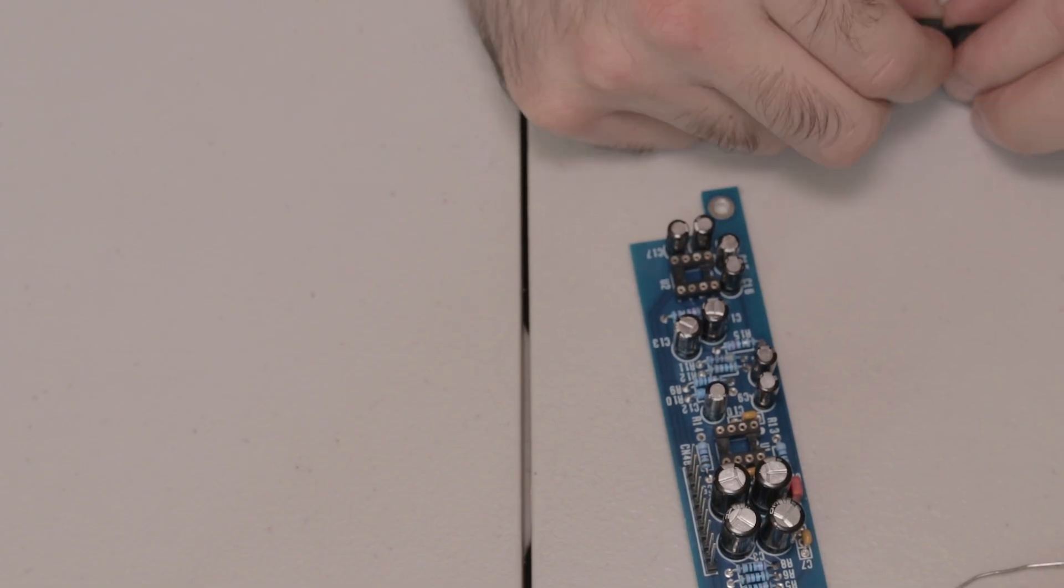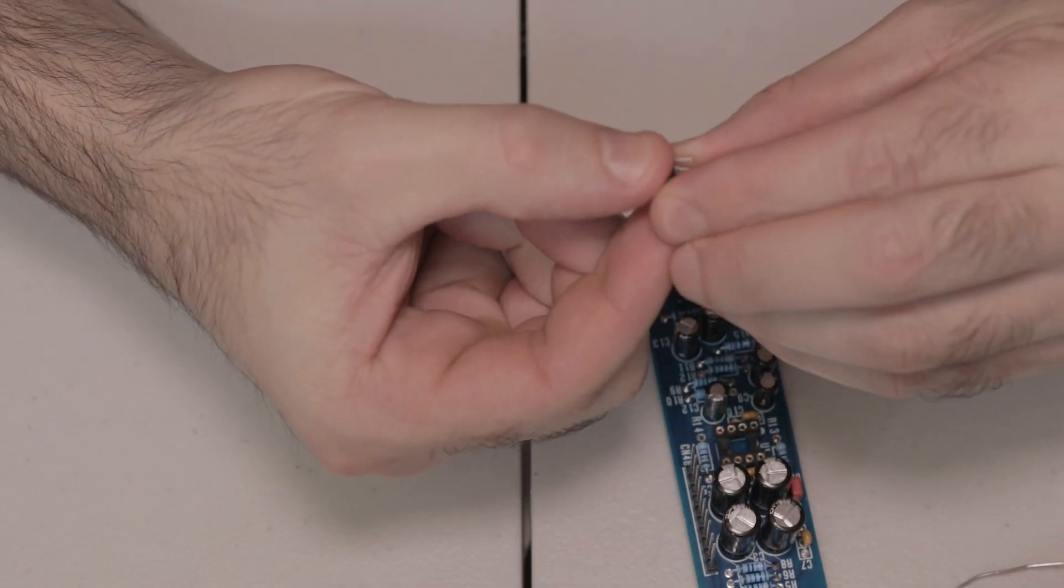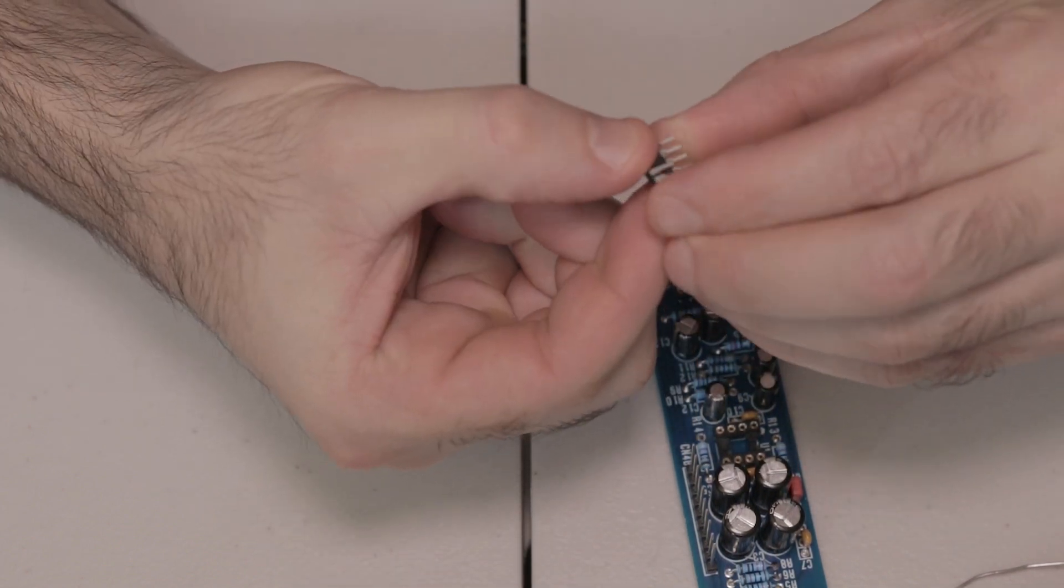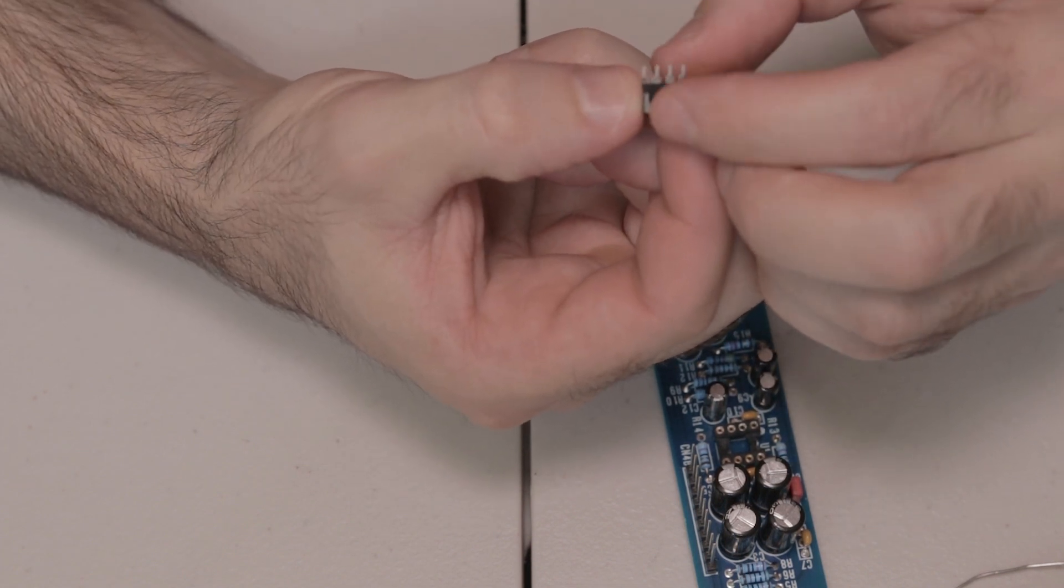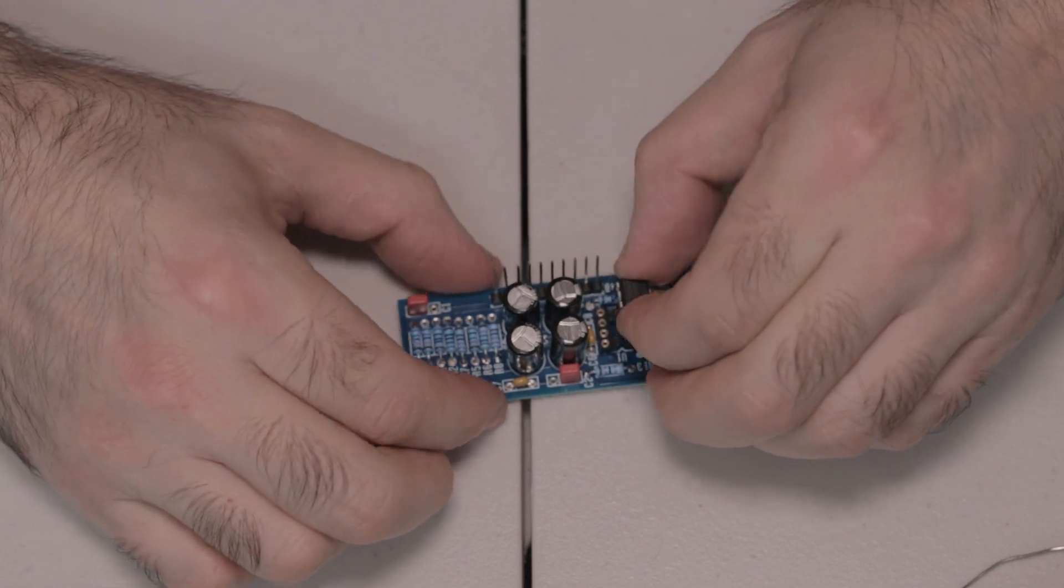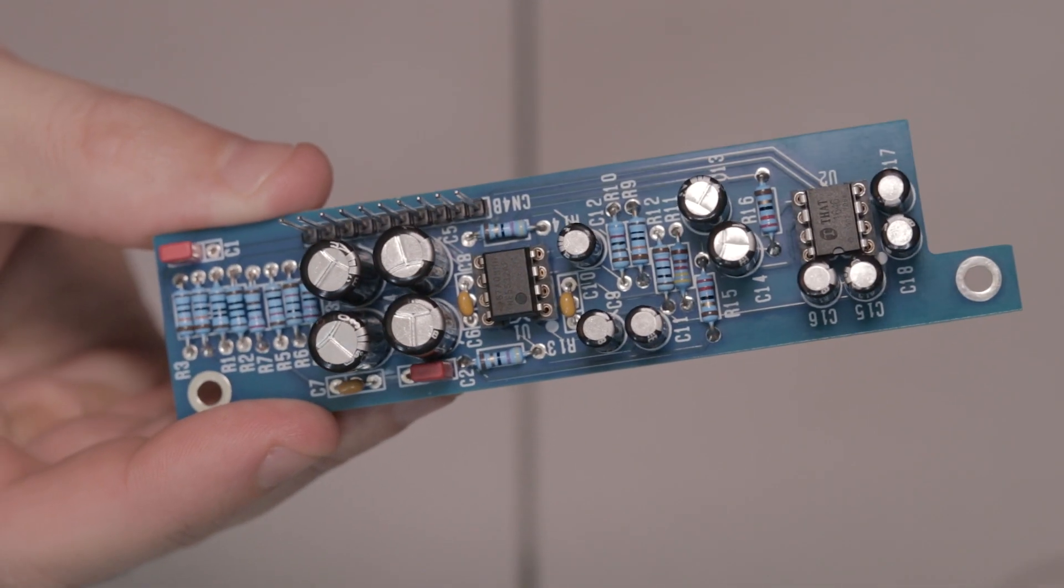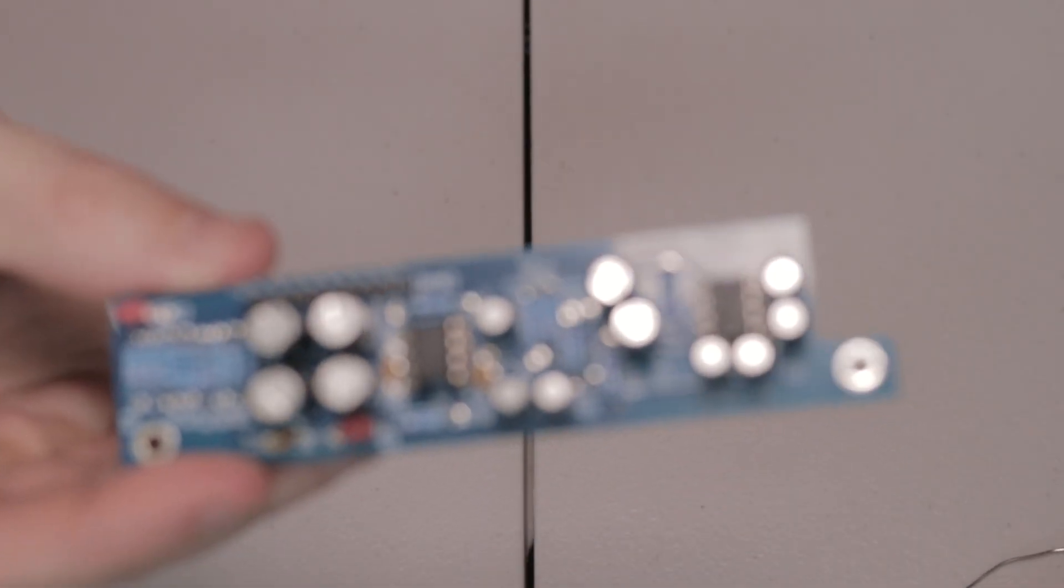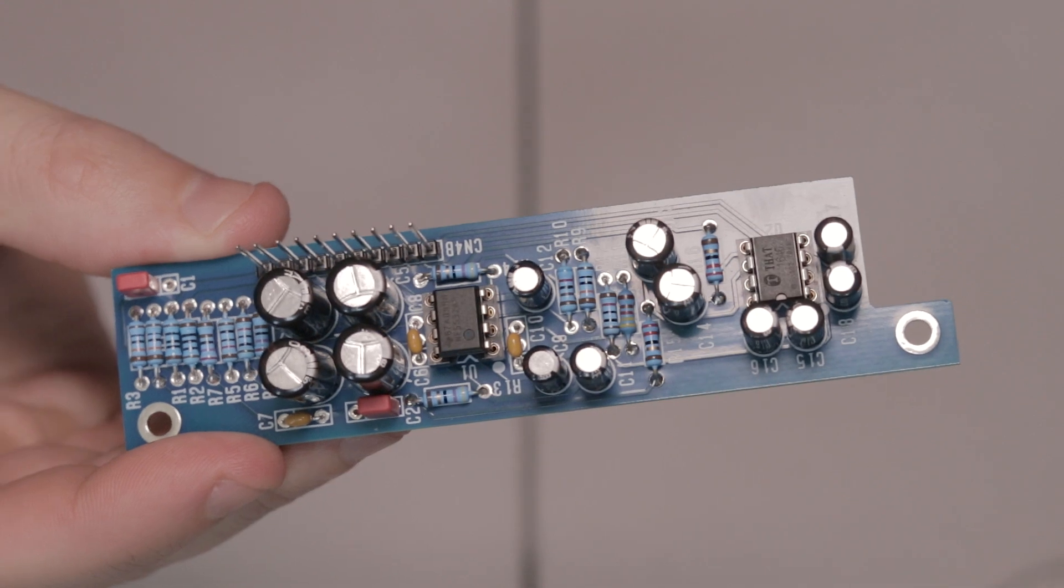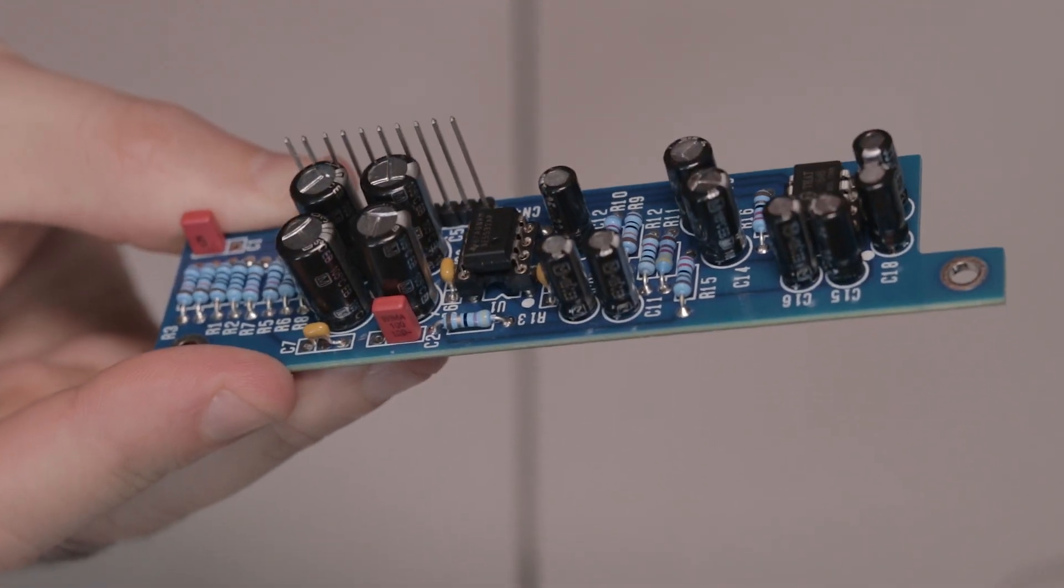And then last but not least, you want to put these ICs U1 and U2 in each of their respective sockets. Make sure you put them in the right way with the little dot showing where the divot is in the silkscreen PCB. And just make sure you line them up correctly and you put them in the right socket. And just be gentle with bending the legs, don't force them into the sockets. Just make sure you gently bend the legs and put them in place carefully so you don't damage them.